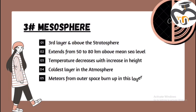Number three: the mesosphere. It's the third layer and it's present above the stratosphere. It extends from 50 to 80 km above mean sea level. The temperature decreases with increase in height. It's the coldest layer in the atmosphere. Meteors from outer space burn in this layer — the meteorites we see are actually burning up in the mesosphere.